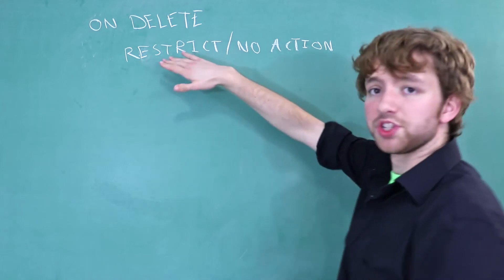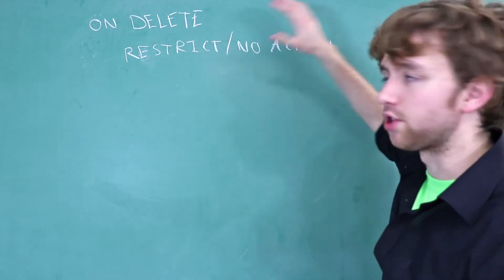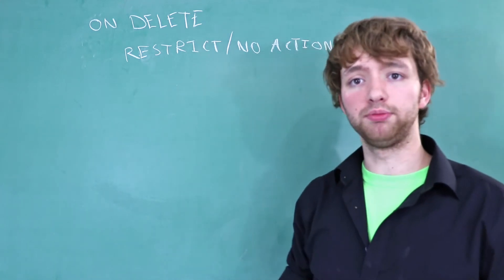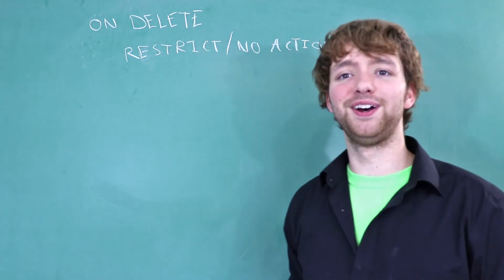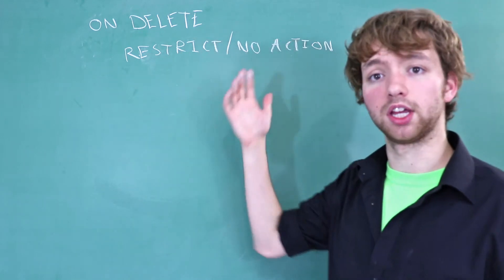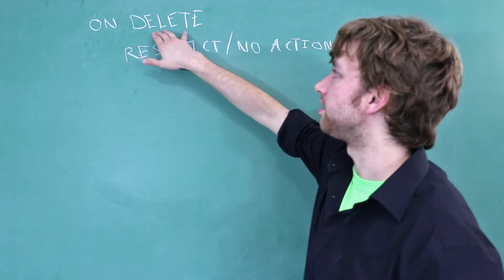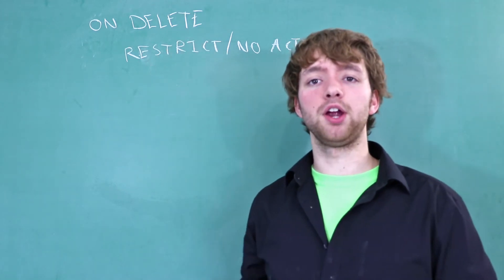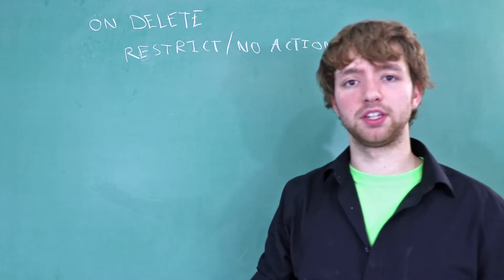So the first option is restrict slash no action. So these are two separate ones. There is a minor difference that if you want to know, you can look it up, but it's over my head. So I'm just going to move on. Essentially these do basically the same thing. If you try to delete a parent, when on delete is set to restrict, it's only going to let you delete that parent if there's no child referencing it. So if you have an entity here,